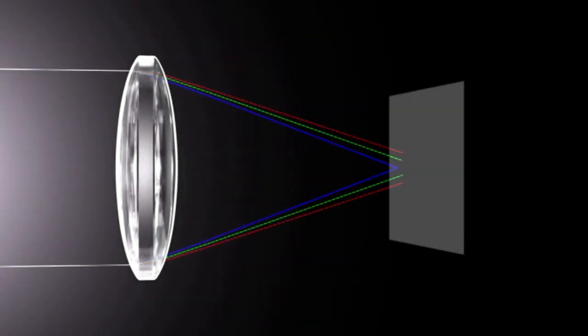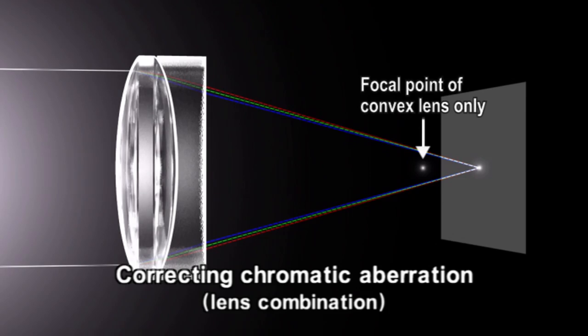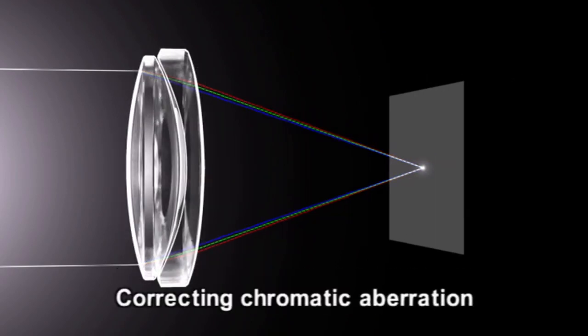Chromatic aberration can also be corrected by combining convex and concave lenses. Moreover, by joining lenses made of different materials, it is even possible to correct chromatic aberration without changing the position of the focal point.